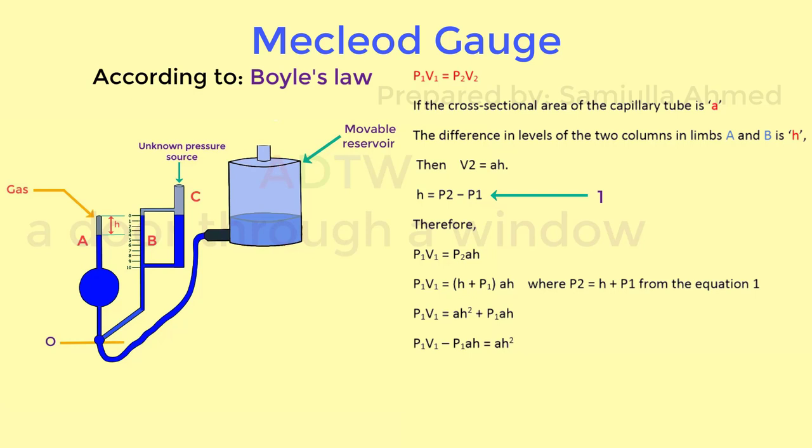This equals AH square plus P1 AH. Then the equation will be P1 V1 minus P1 AH is equal to AH square. Taking P1 common, P1 bracket V1 minus AH is equal to AH square. Then dividing AH square by V1 minus AH, we get P1 is equal to AH square by V1 minus AH.